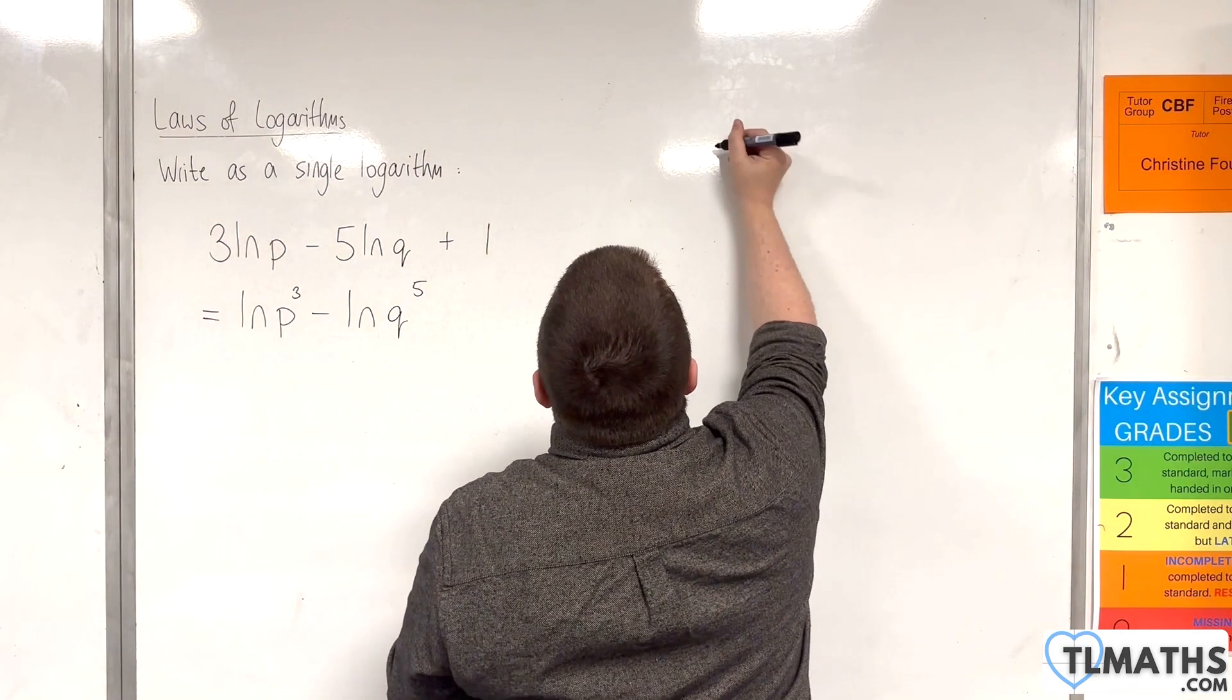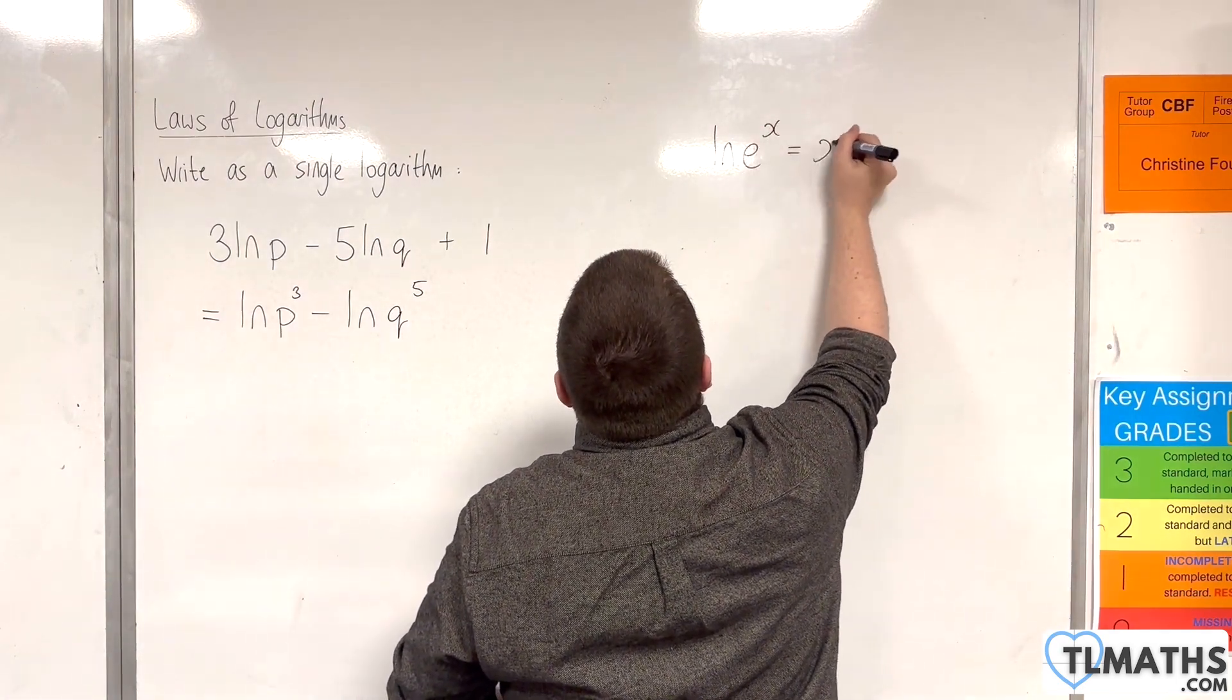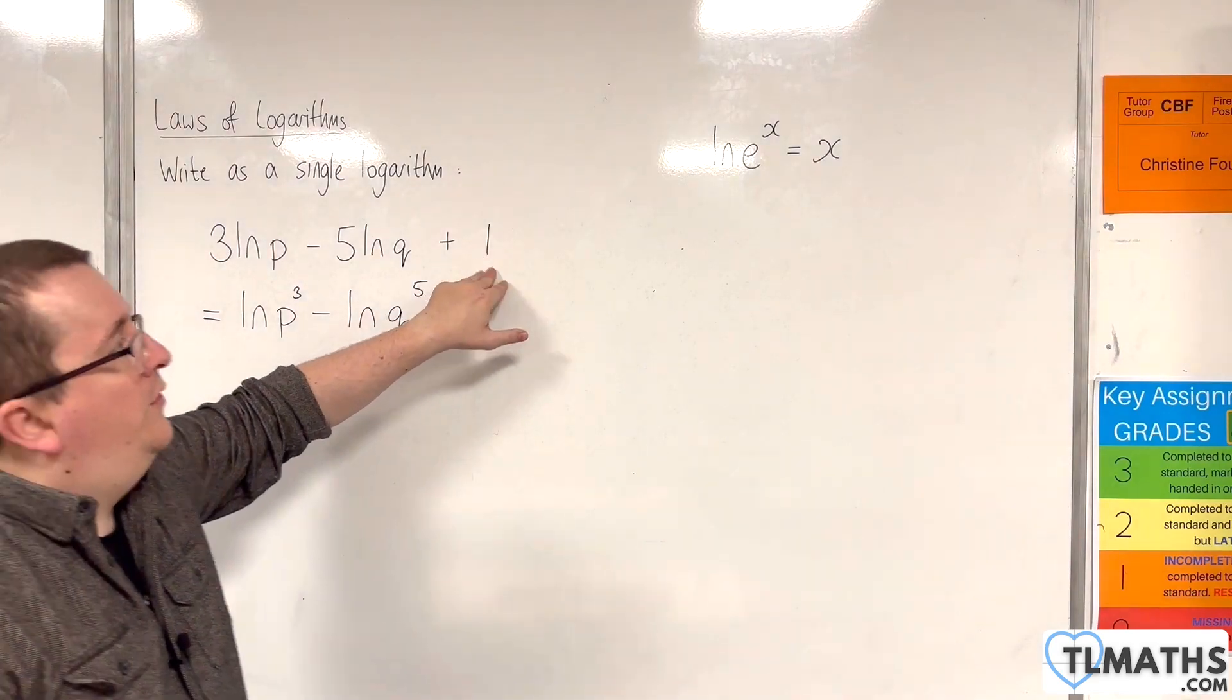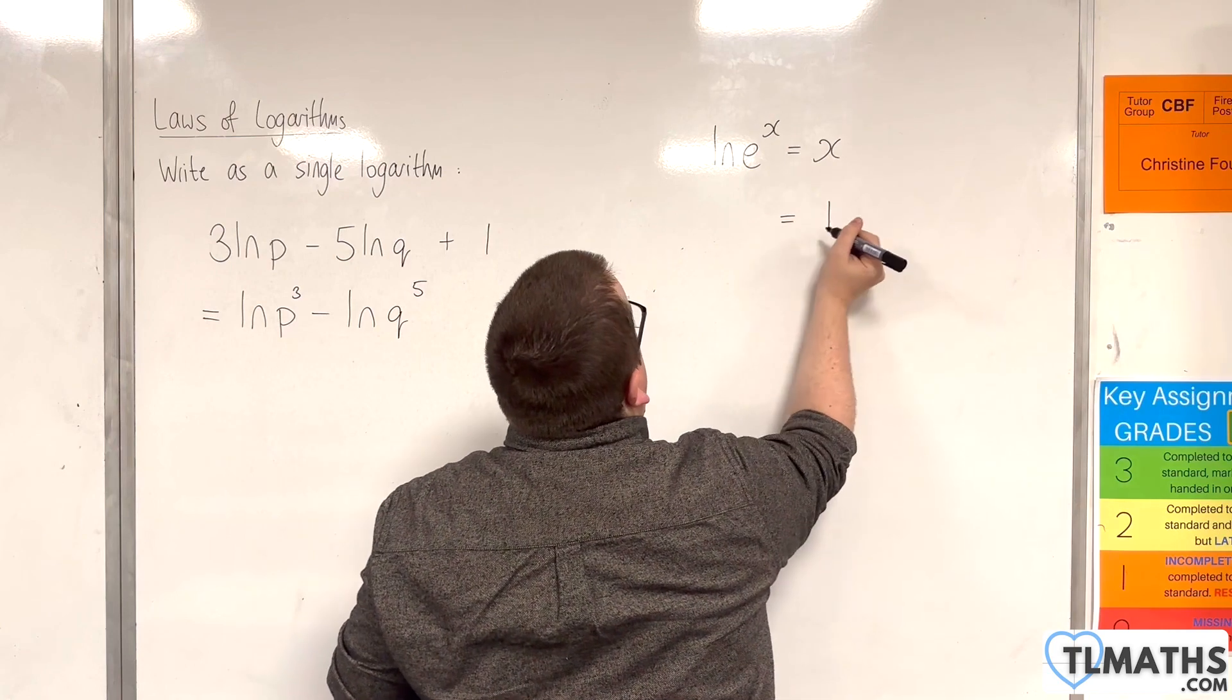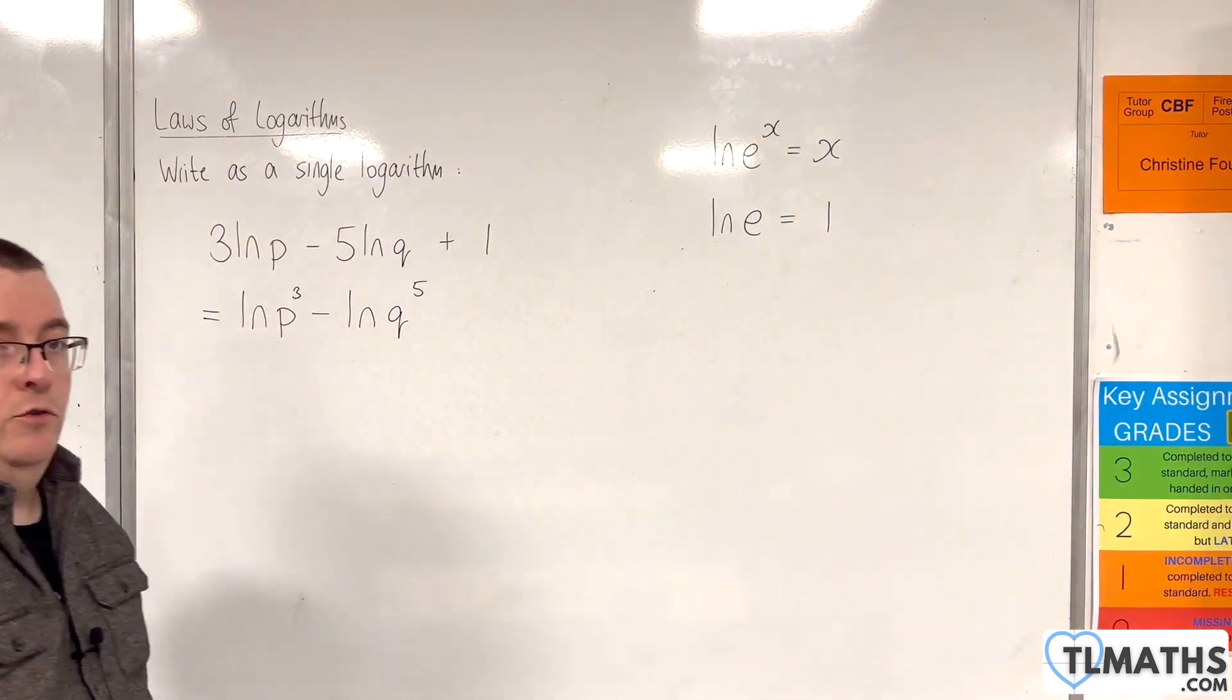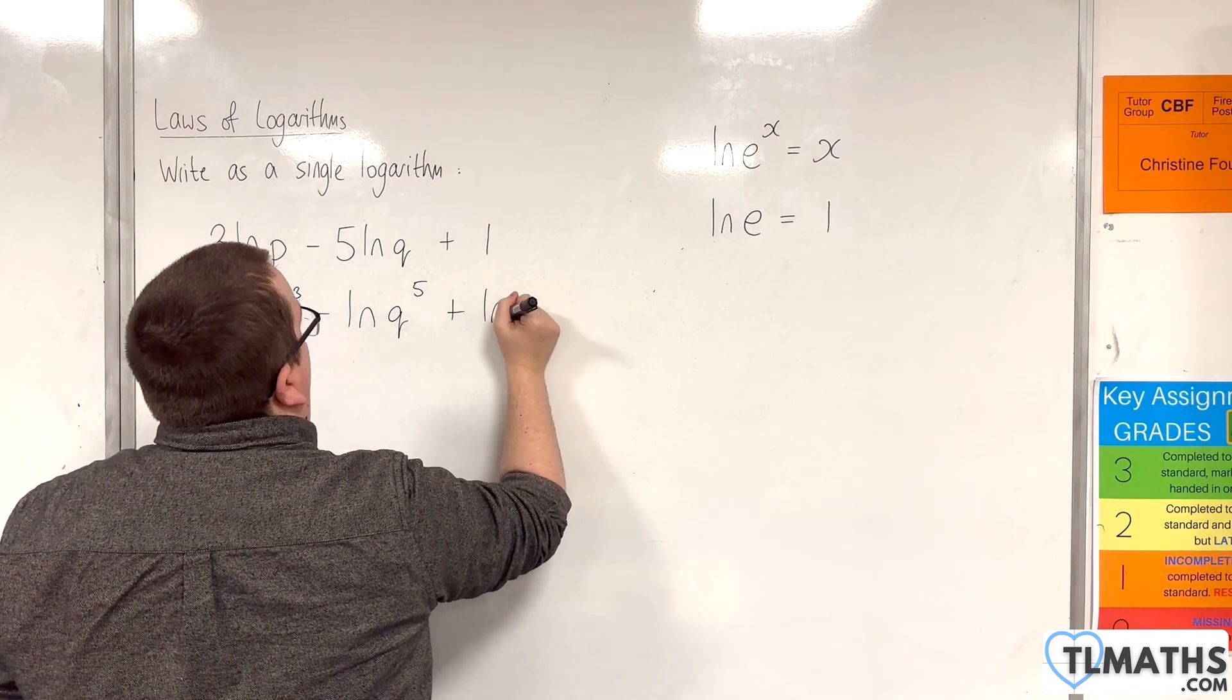Now remember that the natural log of e to the x is x. And here we want 1, so x needs to be 1. So that means that 1 is the natural log of e to the 1, or the natural log of e. So I can write that as the natural log of e.